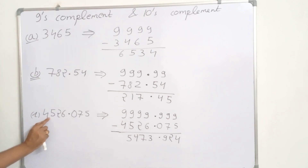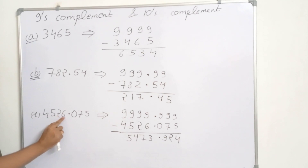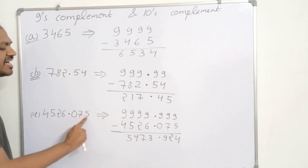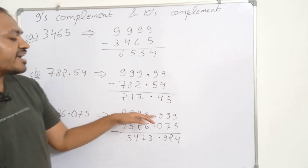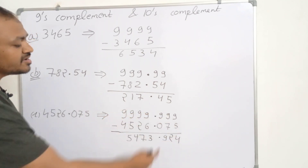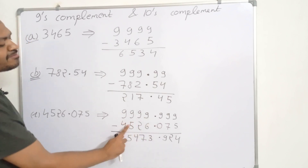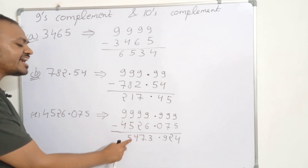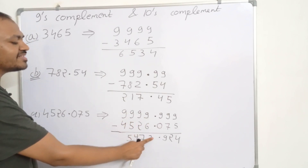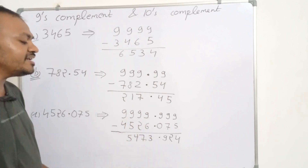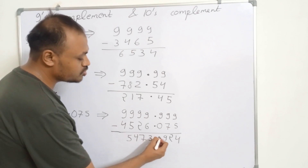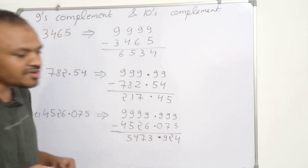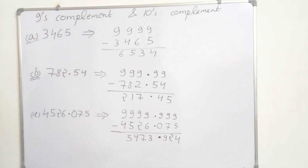In the third example, we have 4526.075. Again subtracting 9 from all the numbers, we get 5473.924. This is how we calculate the 9's complement of a number.